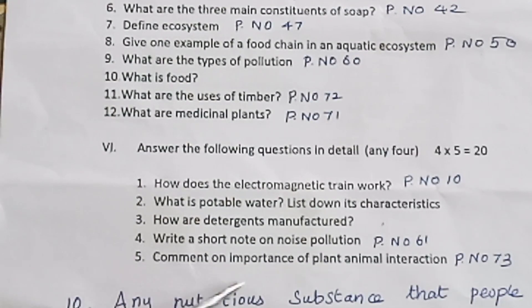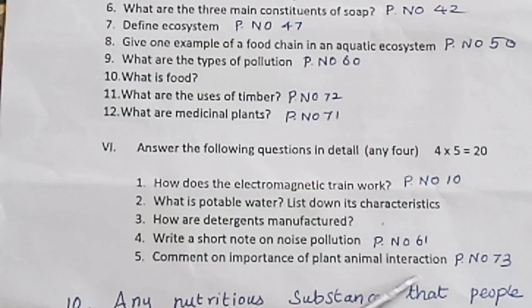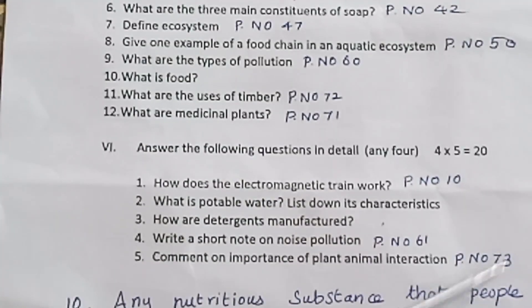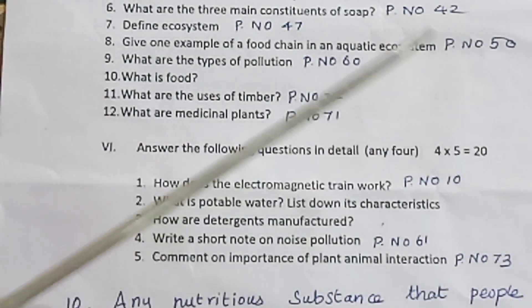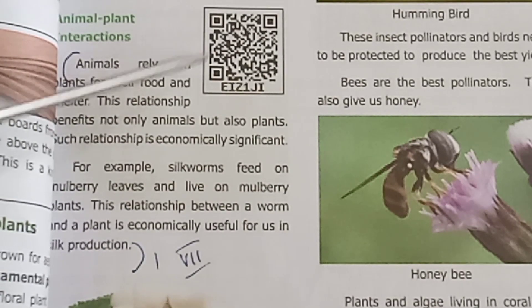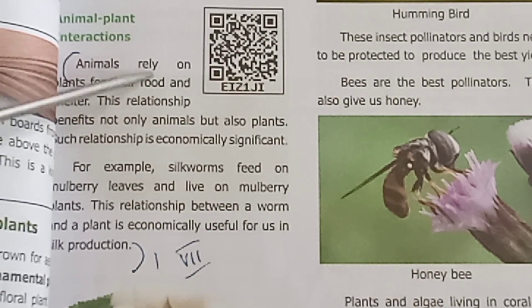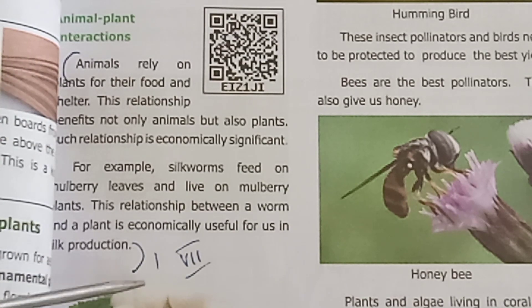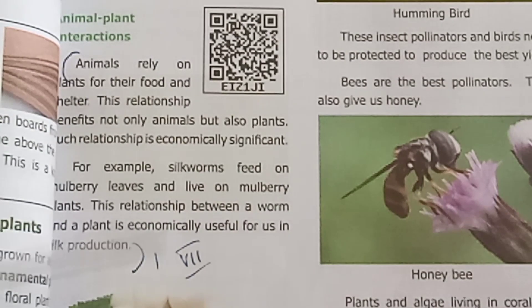Fifth one: Comment on the importance of plant-animal interaction. Page number 73. Animals rely on plants for food and shelter. Silk production is one example of plant-animal interaction. All the best.